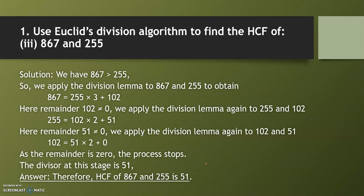Question 3: HCF of 867 and 255. Compare the two numbers — 867 is greater than 255. Apply the division lemma: divide 867 by 255. You get the quotient as 3 and the remainder as 102.